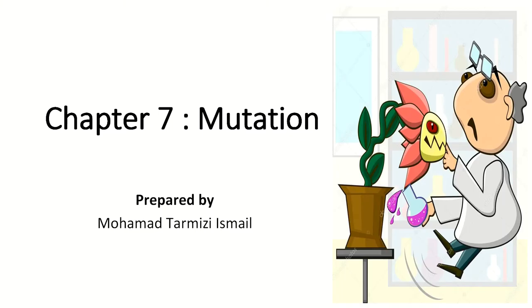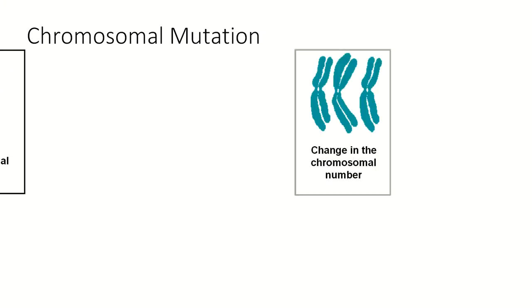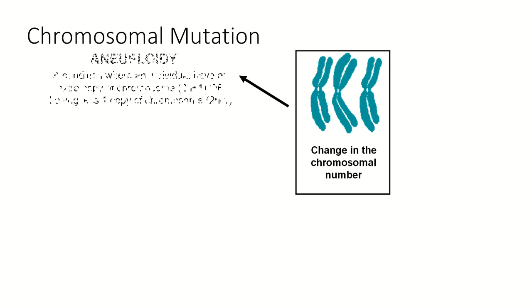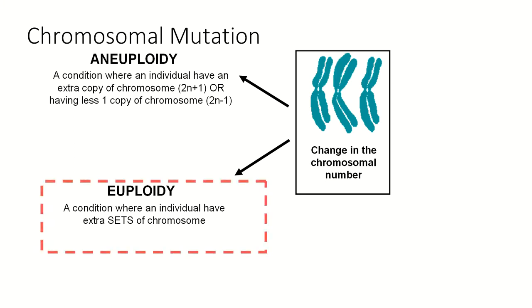Hi guys, we meet again. In this video, we are going to be discussing chapter number 7 still — mutation — but we are going to be focusing on chromosomal mutation, specifically change in the chromosomal number, focusing on euploidy or in other words polyploidy, which is a condition where an individual has extra sets of chromosomes.